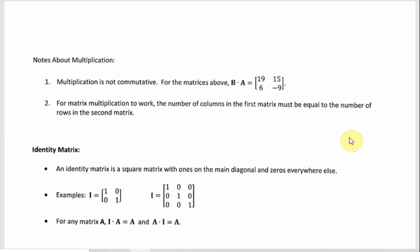A note about multiplication: matrix multiplication does not commute. If you compute B times A instead of A times B, you get something different. Also, for matrix multiplication to work at all, the number of columns in the first matrix must match the number of rows in the second; otherwise you can't multiply them.